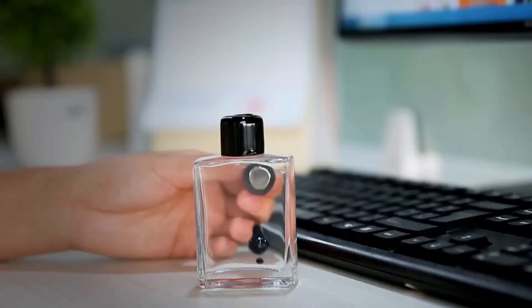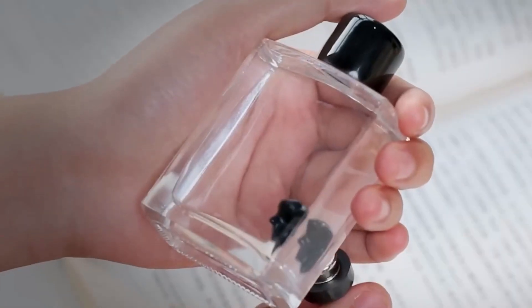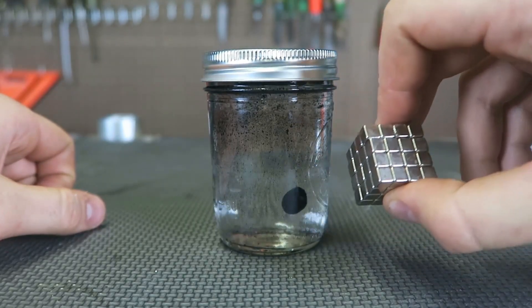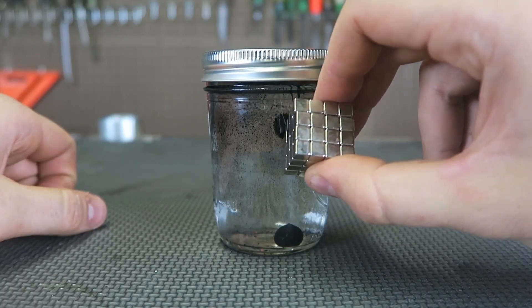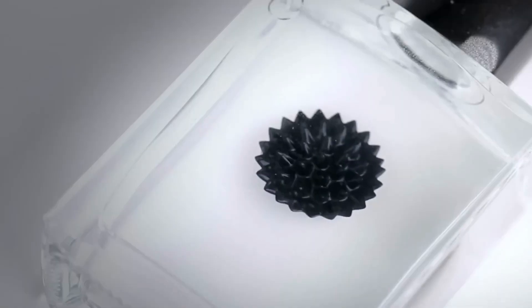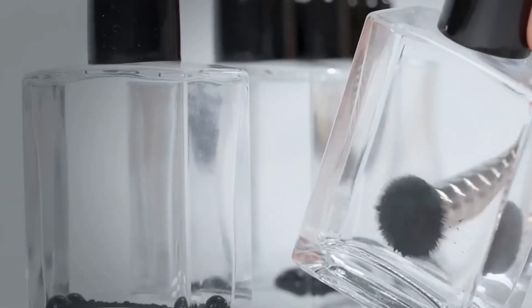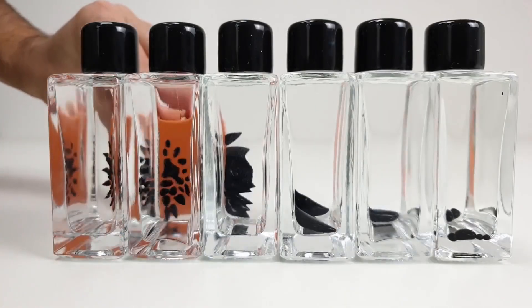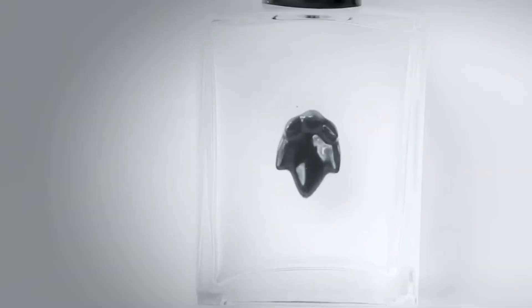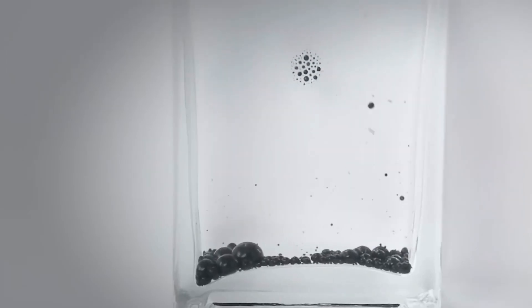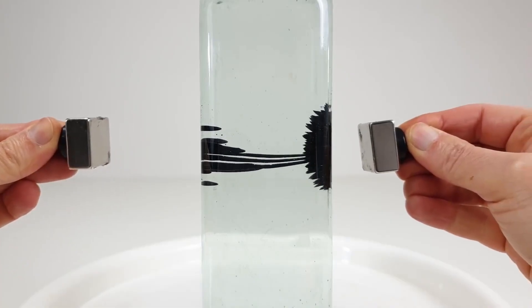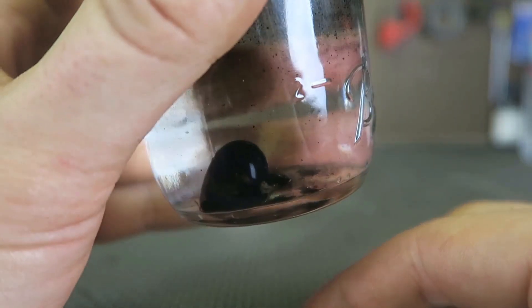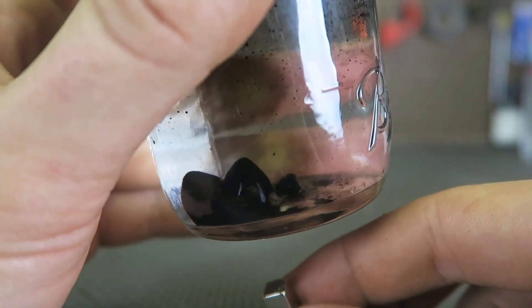Ferrofluid is a liquid filled with nano-sized magnetic particles, coated with a surfactant to prevent clumping. In its resting state, it looks like a simple pool of black ink, but when you bring a magnet close, the tiny iron particles instantly align with the magnetic field lines. The fluid erupts into a stunning, complex pattern of sharp peaks and valleys, directly visualizing the invisible magnetic forces. It's a surreal and interactive display where you literally sculpt with magnetism.